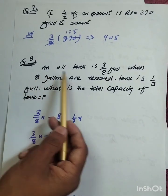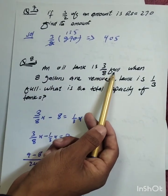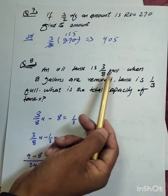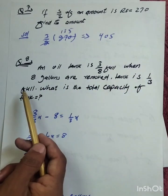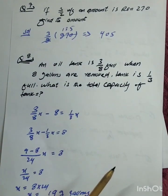Question number 8: An oil tank is 3 divided by 8 full. When 8 gallons are removed, the tank is 1 divided by 3 full. What is the total capacity of the tank? Setting up the equation: 3 divided by 8 times x minus 8 equals 1 divided by 3 times x.